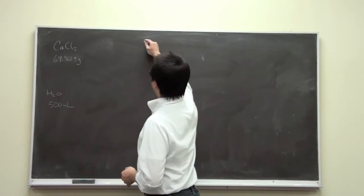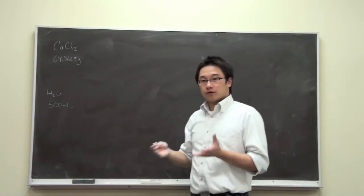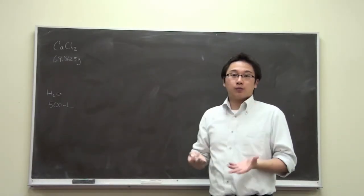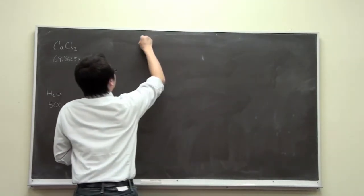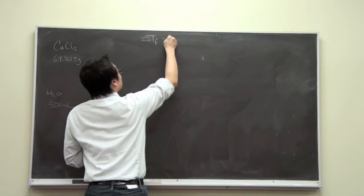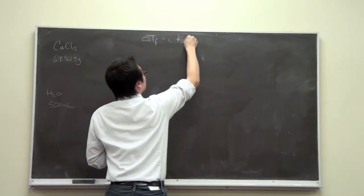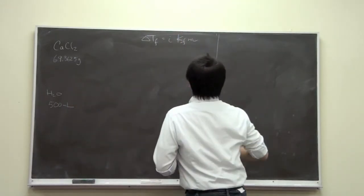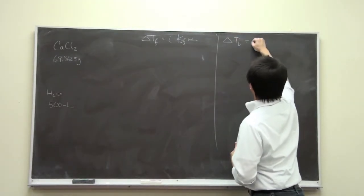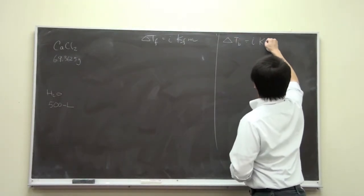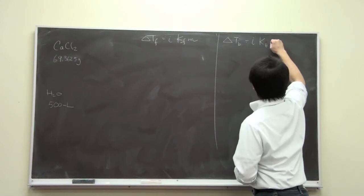So we are going to use the formula for the freezing point depression and the boiling point elevation. Let me just write down right here. There is the freezing point depression and the boiling point elevation is this.